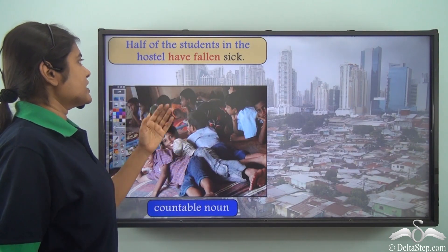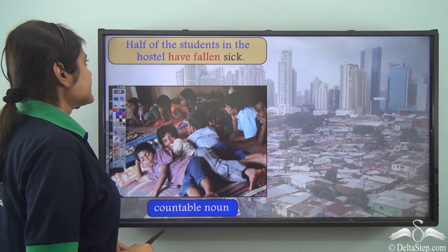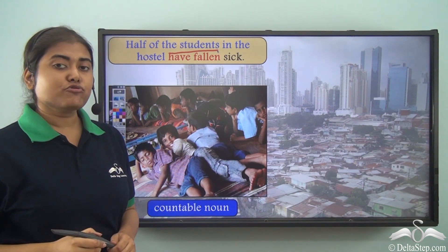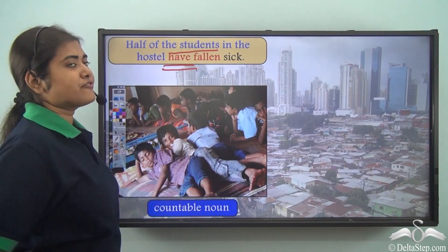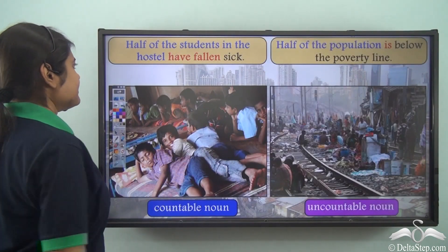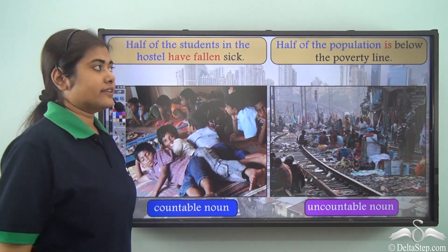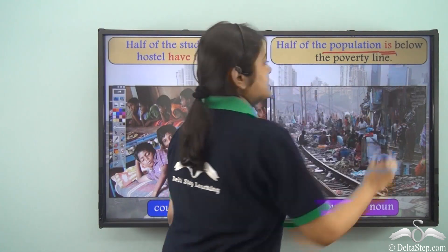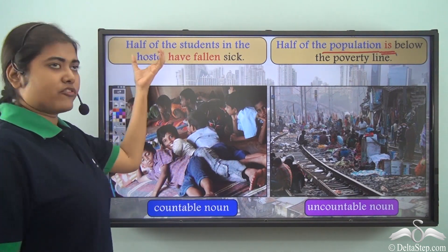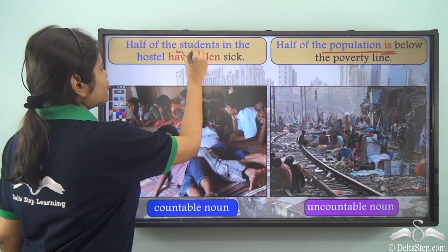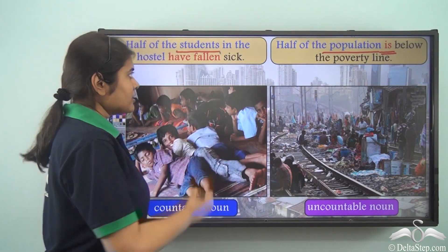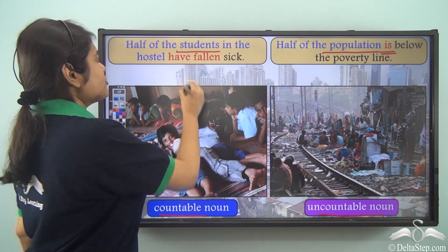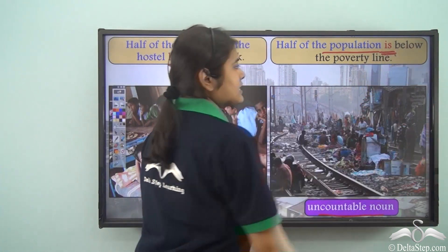'Half of the students in the hostel have fallen sick.' Here 'students' is a countable noun, so we use the plural verb 'have fallen.' But 'Half of the population is below the poverty line' — 'population' is an uncountable noun, so we use the singular verb 'is.' Once again, 'half of the' denotes a quantity, and the verb is determined by the noun that follows: countable → plural verb; uncountable → singular verb.